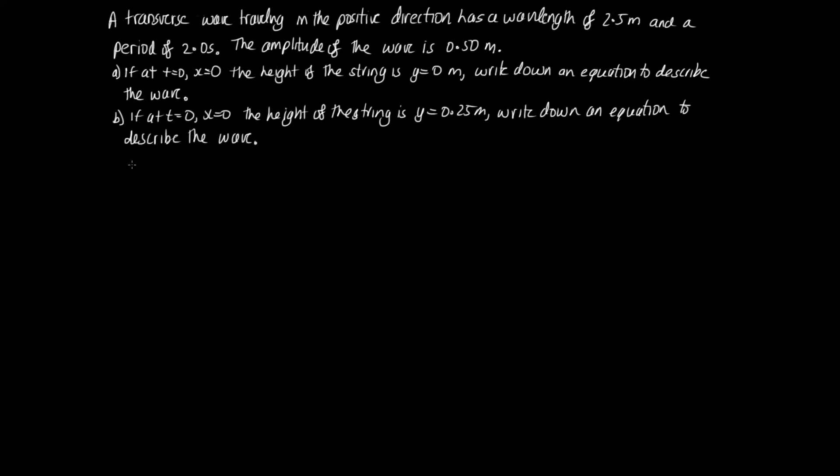So to answer this one, we know that the wavelength is given by 2.5 meters. We've got that the period is equal to 2.0 seconds and that the amplitude is equal to 0.50 meters. Our equation for a transverse sinusoidal wave is given by y of x and t is equal to A sine kx minus omega t plus phi. This is for a wave traveling in the positive direction like we were asked for. So what we're going to need to do is work out k and work out omega.